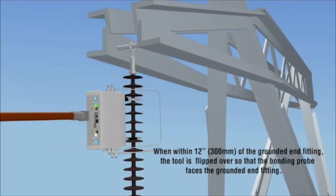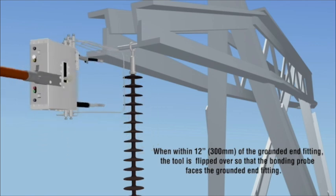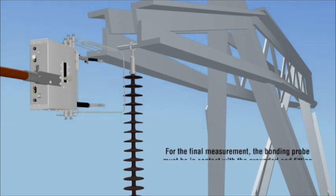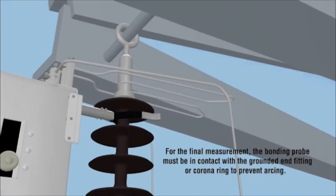When within 12 inches (300 mm) of the grounded end fitting, the tool is flipped over so that the bonding probe faces the grounded end fitting. For the final measurement, the bonding probe must be in contact with the grounded end fitting or corona ring to prevent arcing.